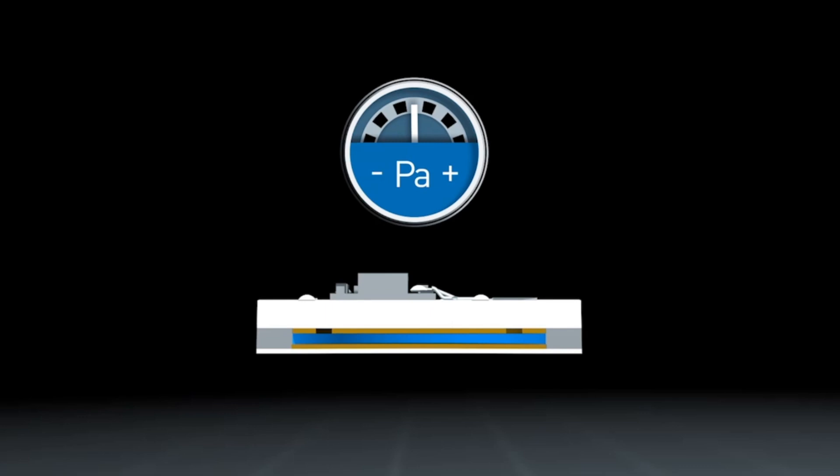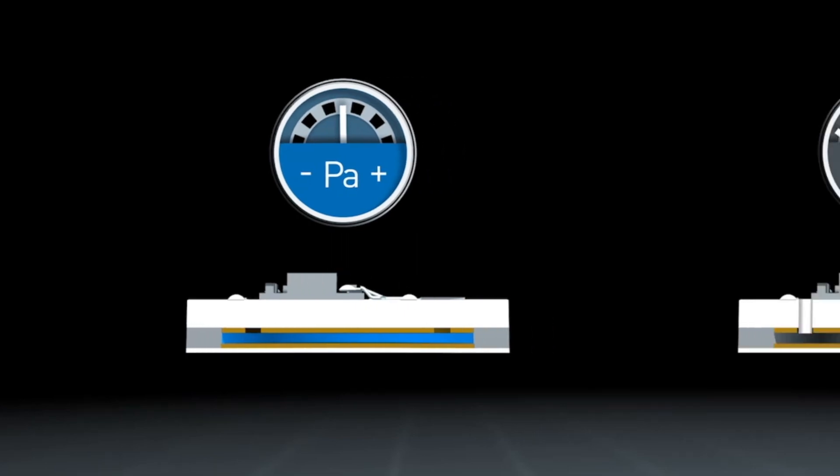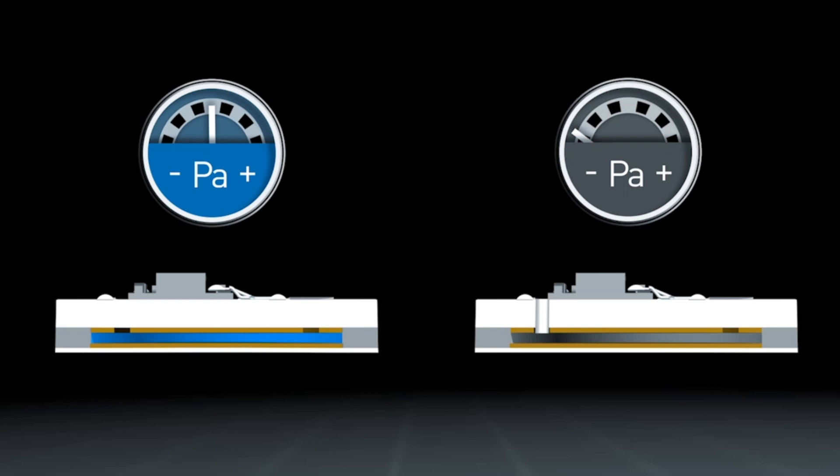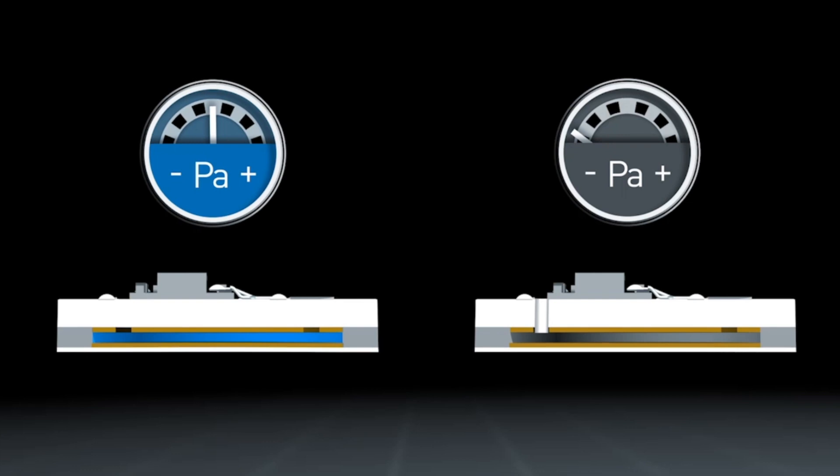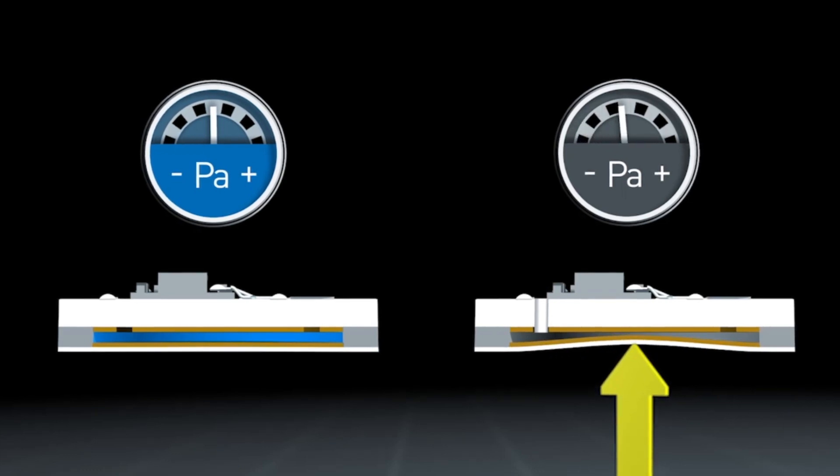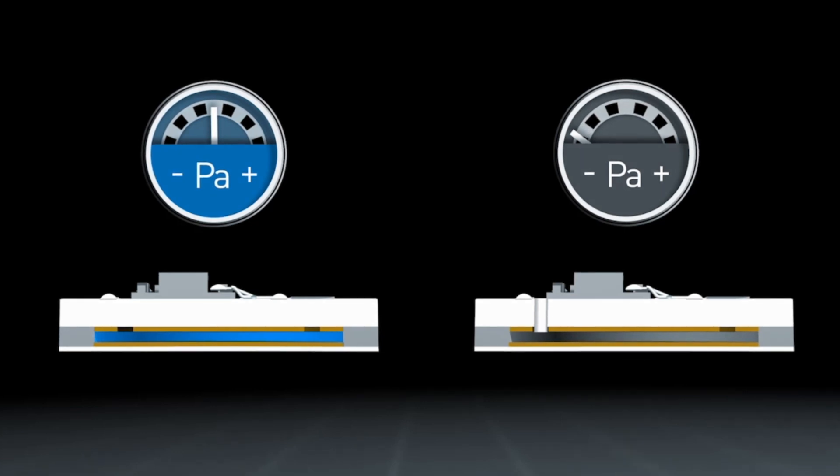The absolute pressure cell is a closed system and measures against the vacuum. In an atmospheric environment, the air pressure is indicated. In a gauge pressure cell, an opening in the substrate permits the pressure compensation between the atmospheric environment and the inside of the cell. The cell measures values which are relative to the ambient pressure. In an atmospheric environment, the air pressure is not indicated.